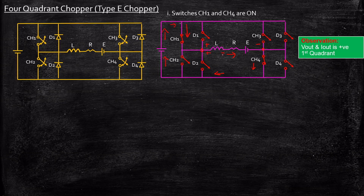By convention, when current flows in this direction into the load, we consider it positive. As a result, Iout is positive. When Vout and Iout are both positive, the circuit is operating in the first quadrant.